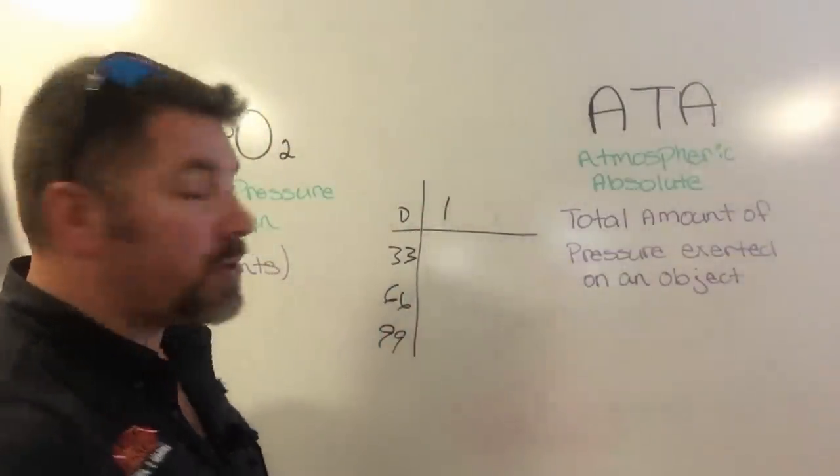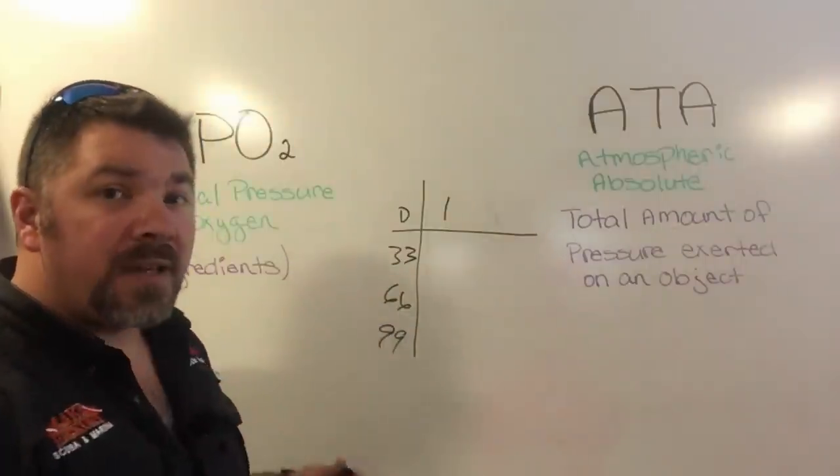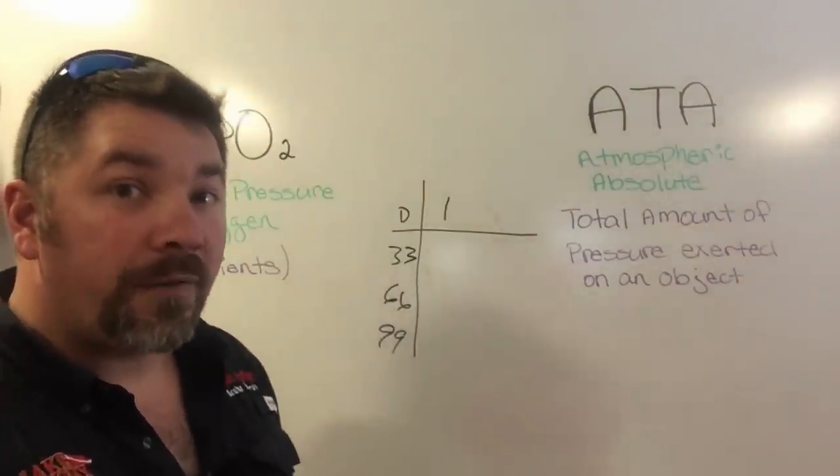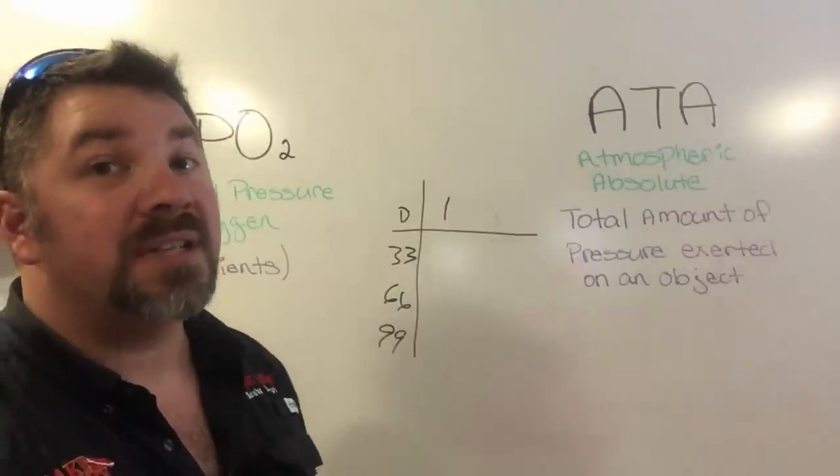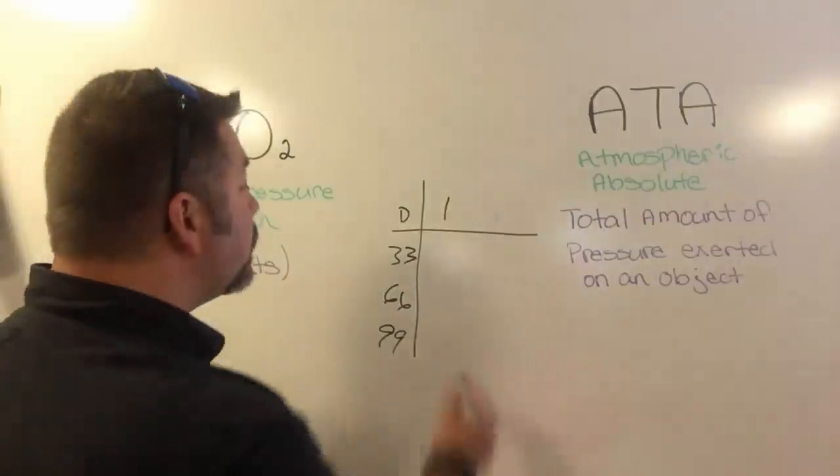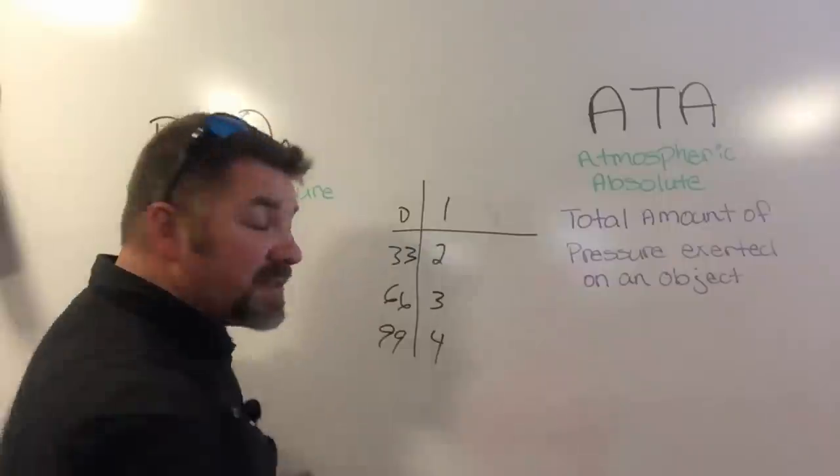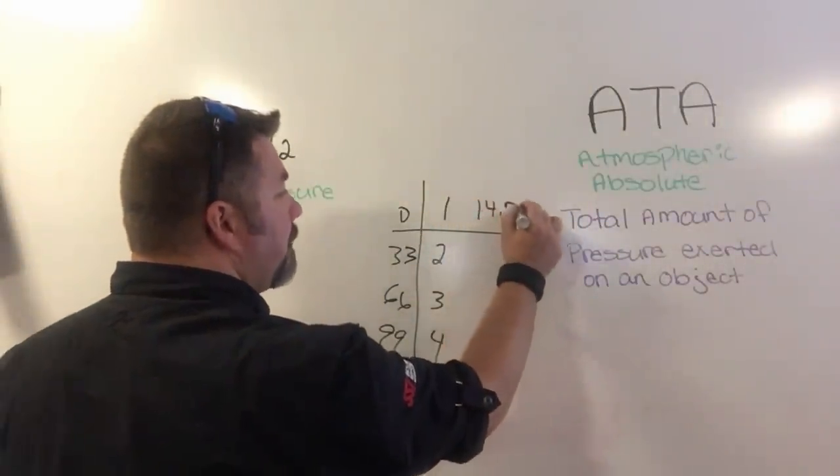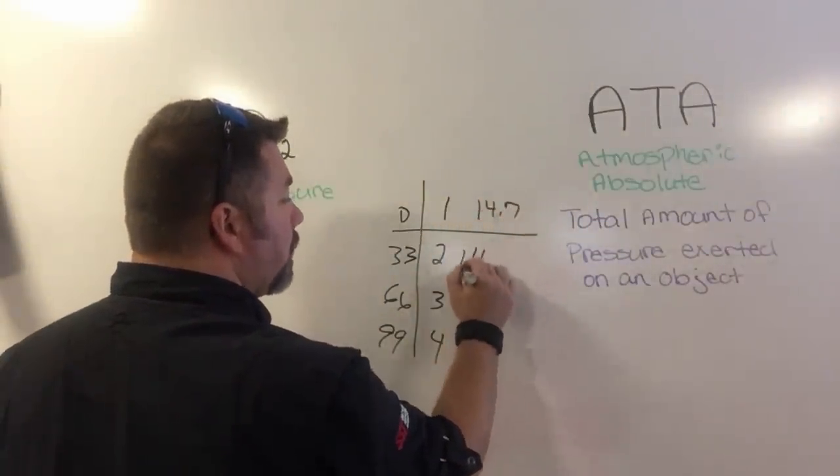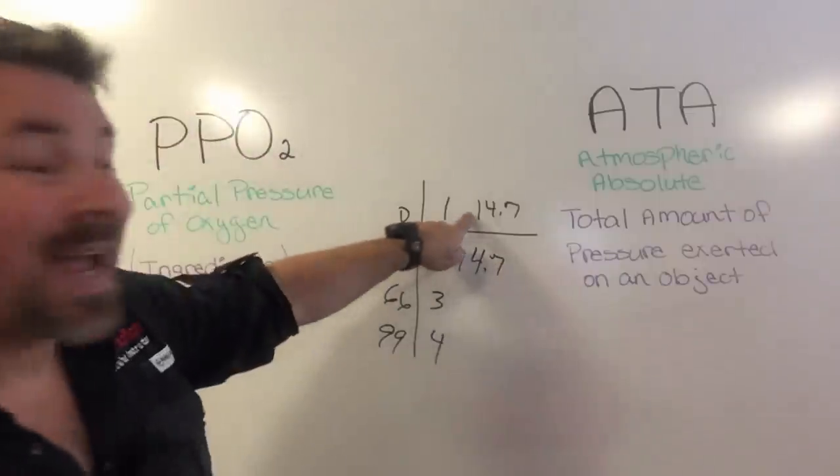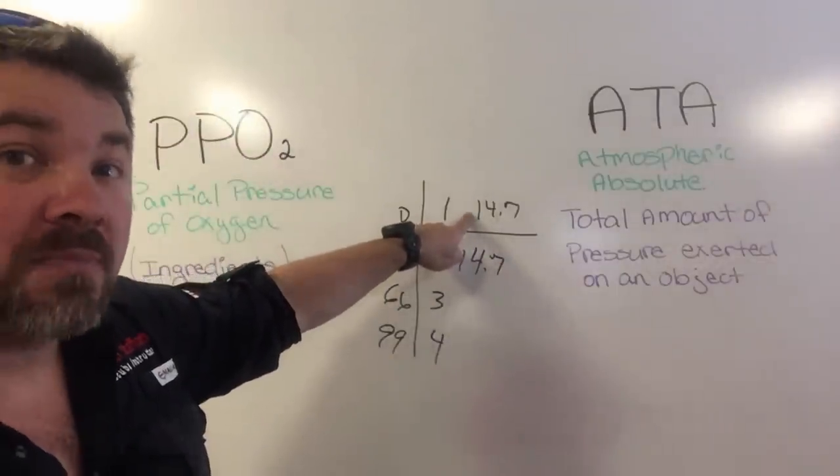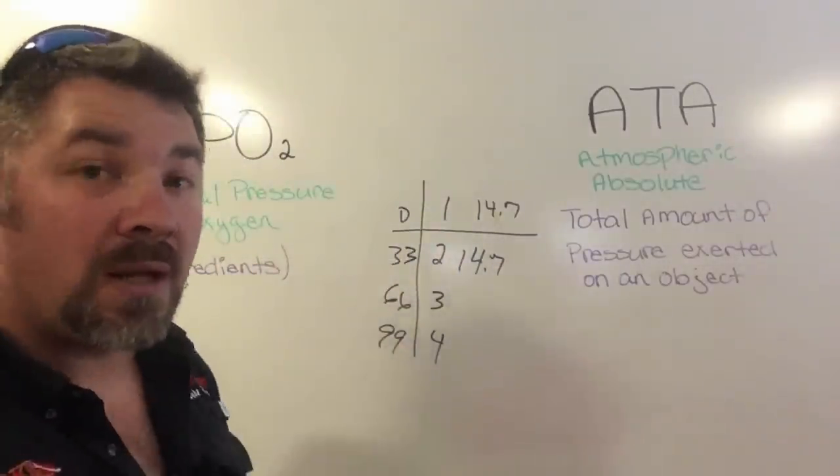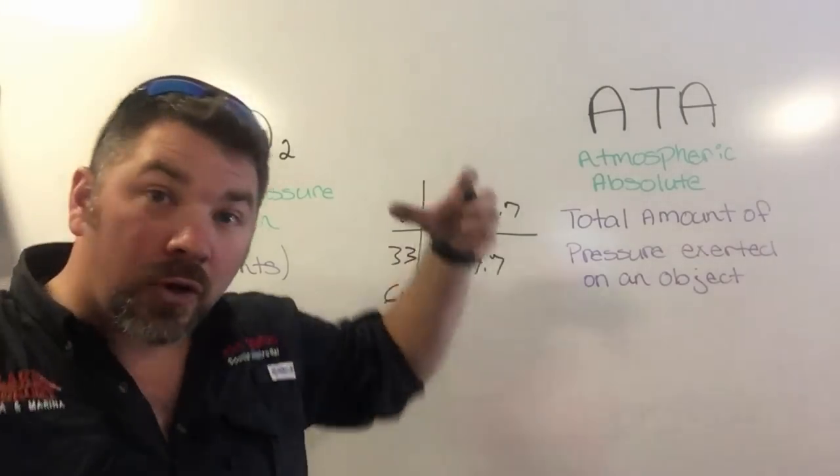Here at the surface, I'm under one atmosphere of pressure. Every 33 feet of salt water, every 34 feet of freshwater, or if you like the metric system, every 10 meters you go down, you're going to increase your atmospheric pressure simply by one. All we're doing is increasing the amount of weight pressing in on our body.